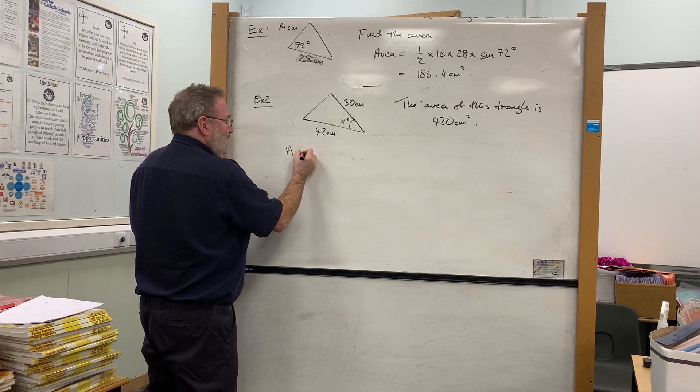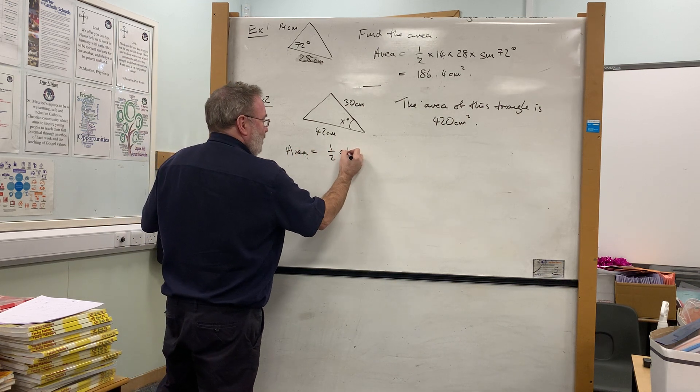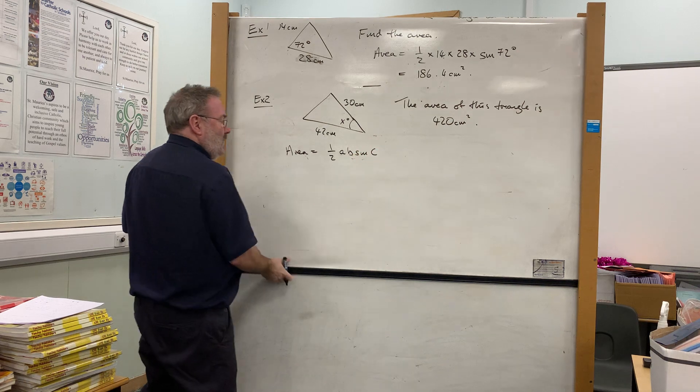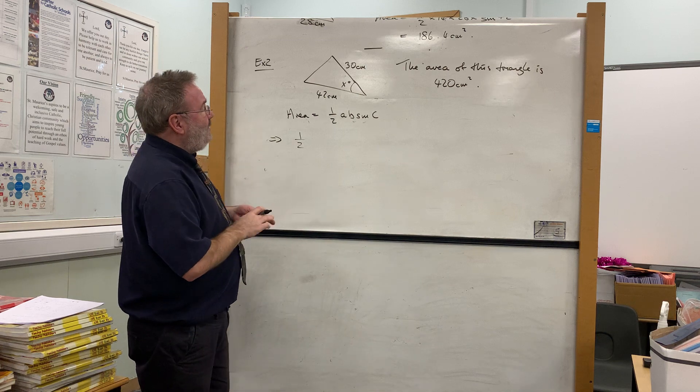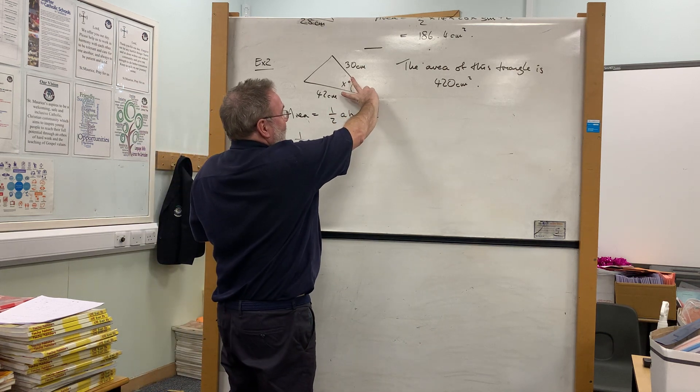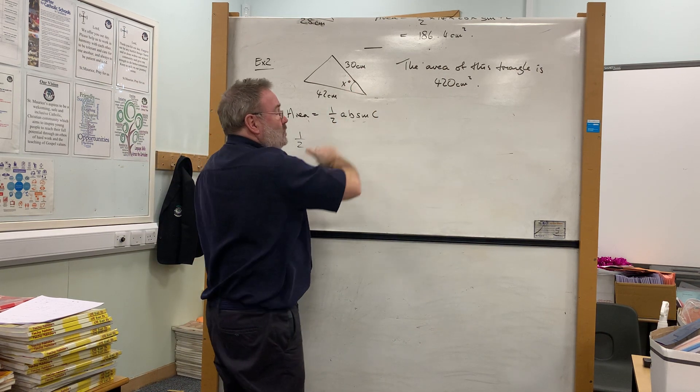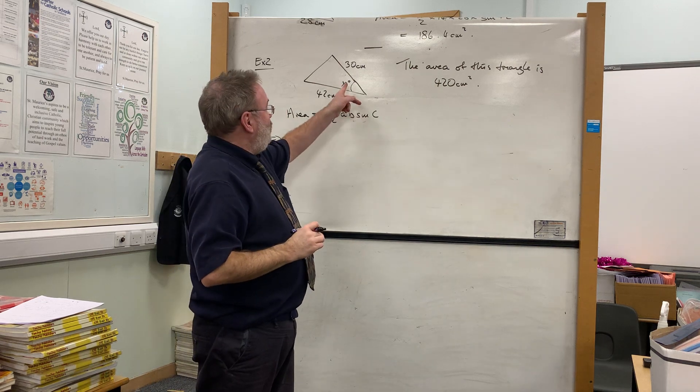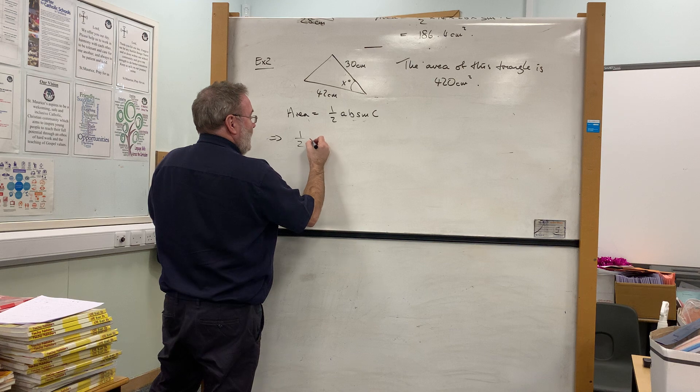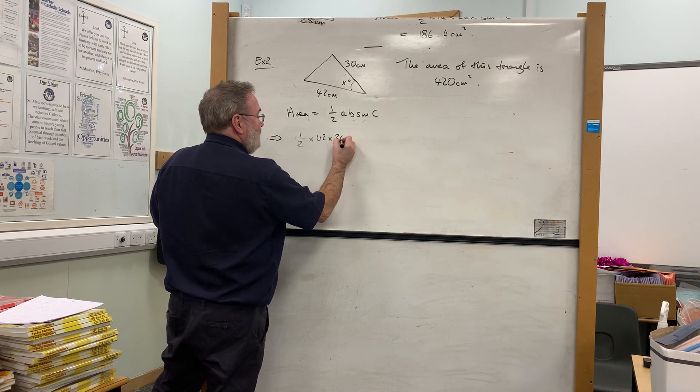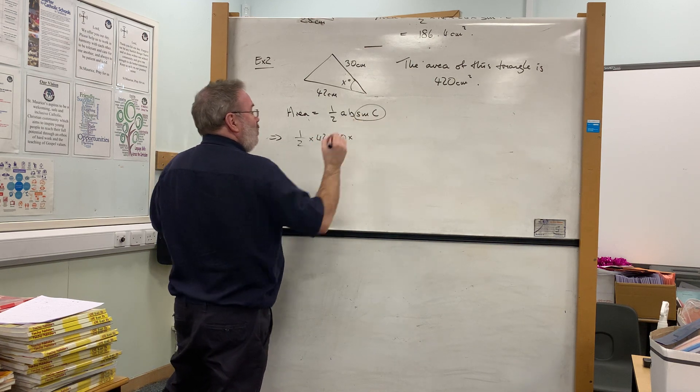Well, we know that the area is given by the formula. So if we slightly rearrange it and write the formula down on the left hand side - now again, there's our information. We're going to use those two sides, we're going to use those two sides in that angle. So if we write that down, that's going to be a half times 42 times 30, and then we don't know the size of the angle, so we're going to have to call that sine x.